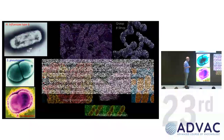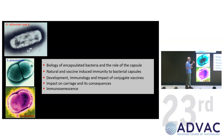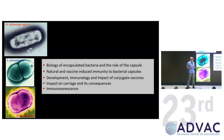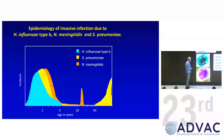During the talk I'm going to, first of all, talk a little bit about the biology of encapsulated vaccines and the role of the capsule. Then I'm going to talk about some natural and vaccine-induced immunity experiments to the capsule, and that'll take us into why they're not very good on their own and why we need to develop and understand the immunology of conjugate vaccines. I'm going to talk about the impact of carriage, and then I'm going to talk about immunosenescence, which is the senility of the immune system — and that's not necessarily for you, but more for the lecturers who are approaching that part of their lives.